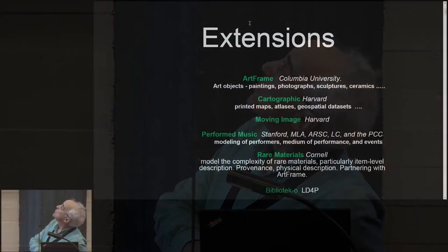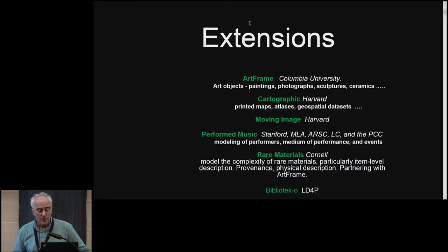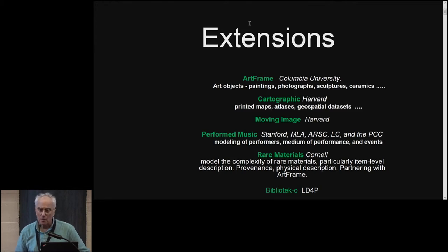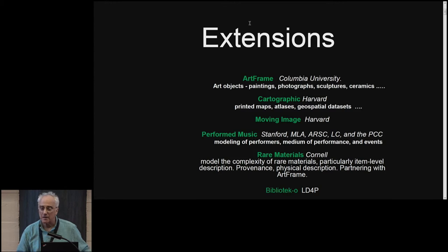There are several extension efforts underway. Art objects is being led by Columbia University. Harvard is leading the effort for extensions in both maps and moving images. There's a Performed Music group being led by Stanford — that's the one I've worked probably the closest with, and I think it's probably the furthest along among the extension ontologies. Rare Materials is being led by Cornell. And then there's Bibliotech-O, which is loosely described as a BibFrame extension, but they're going to be speaking next so they can characterize that better.